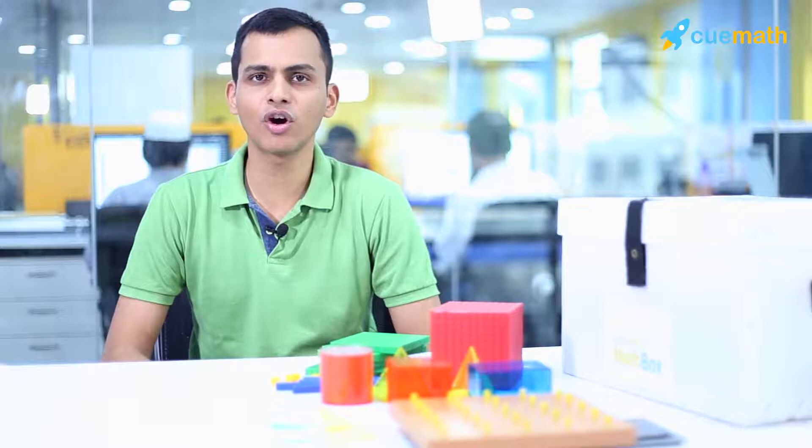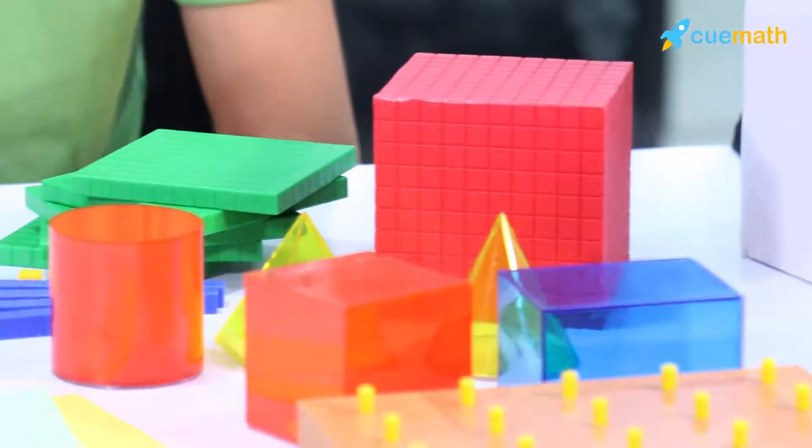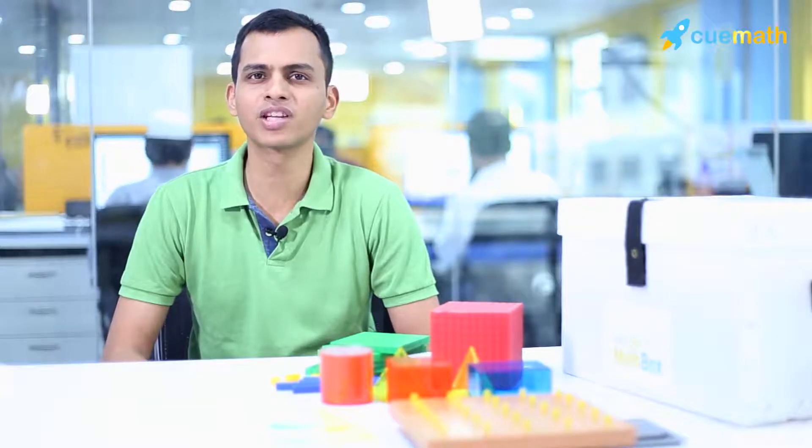In school, students are often asked to memorize properties of solid shapes—shapes like spheres, cylinders, cubes, cones, etc. For some reason, they're expected to memorize formulae of the surface area of the cylinder, which is 2πr(r+h). They're never given an opportunity to explore these shapes and discover these formulae for themselves.